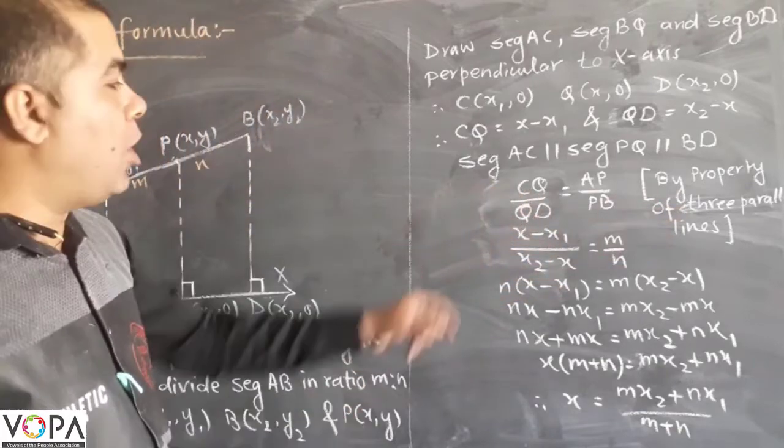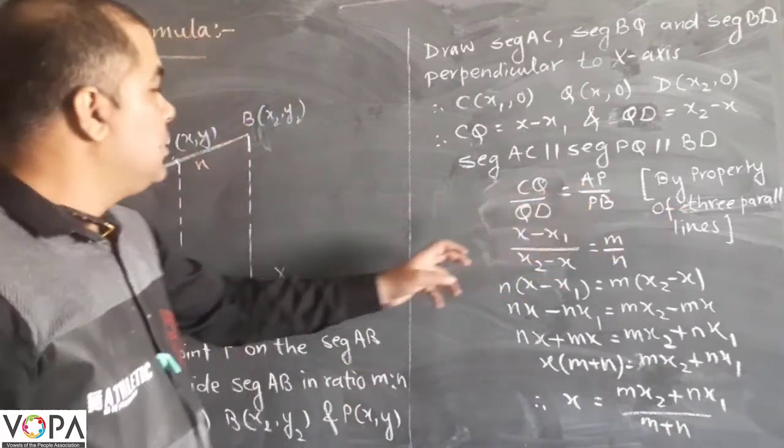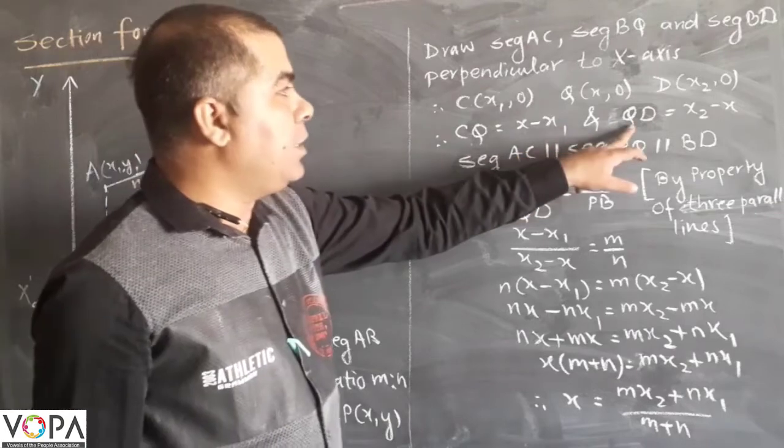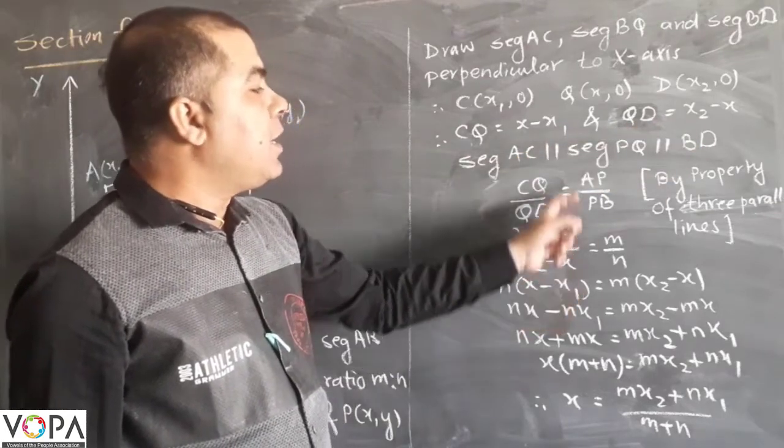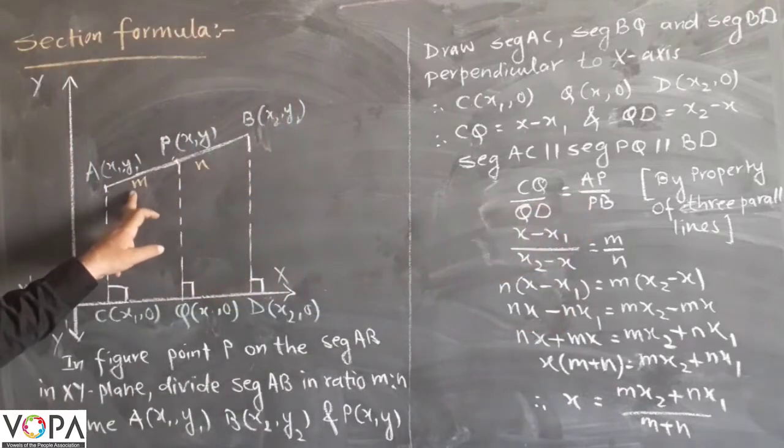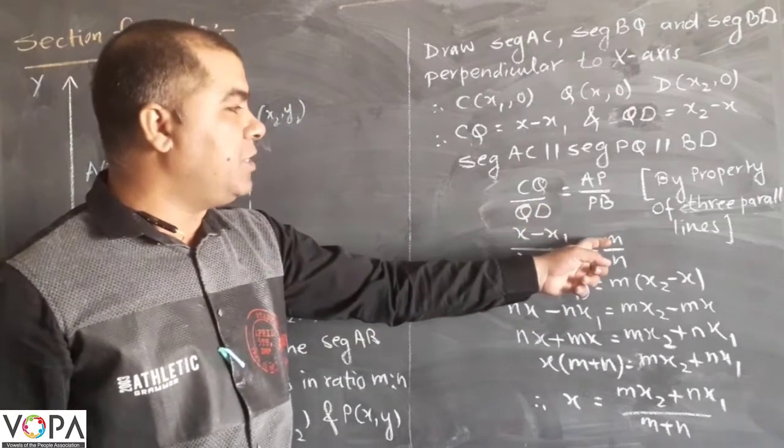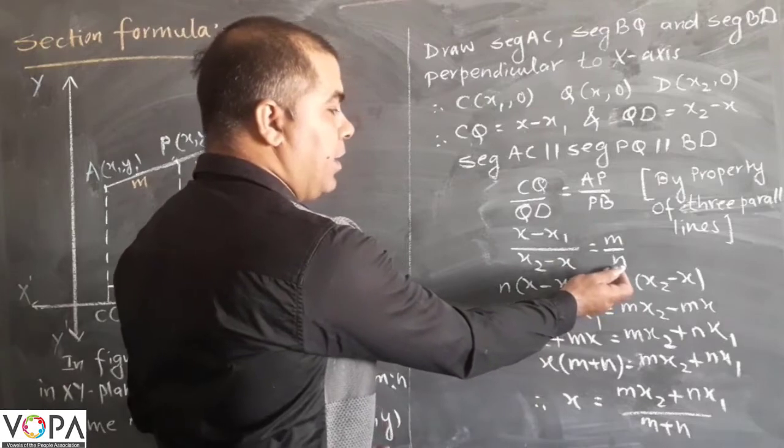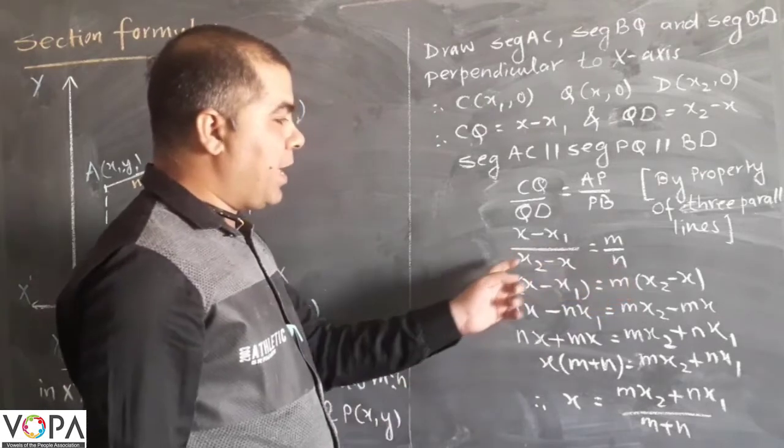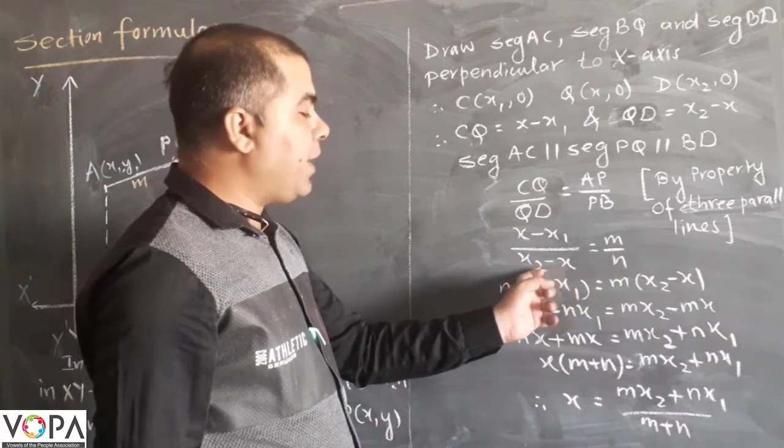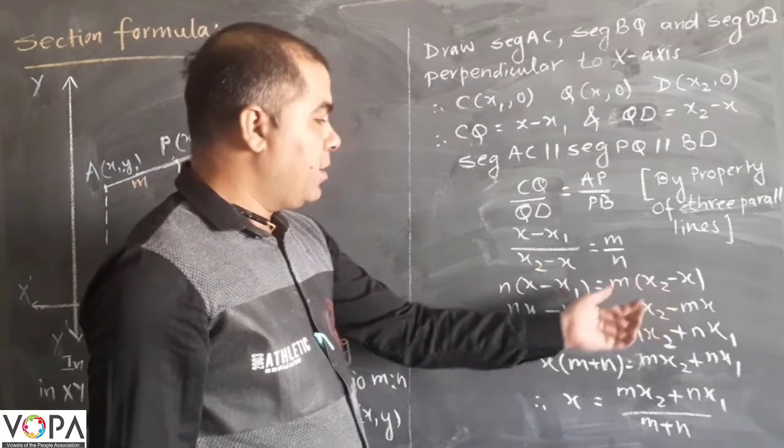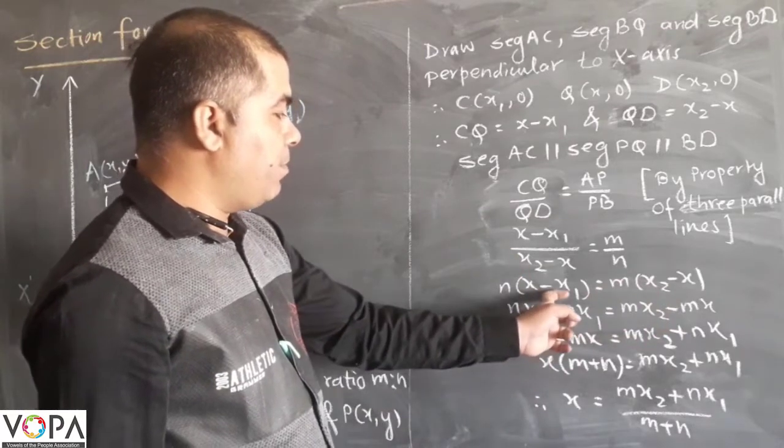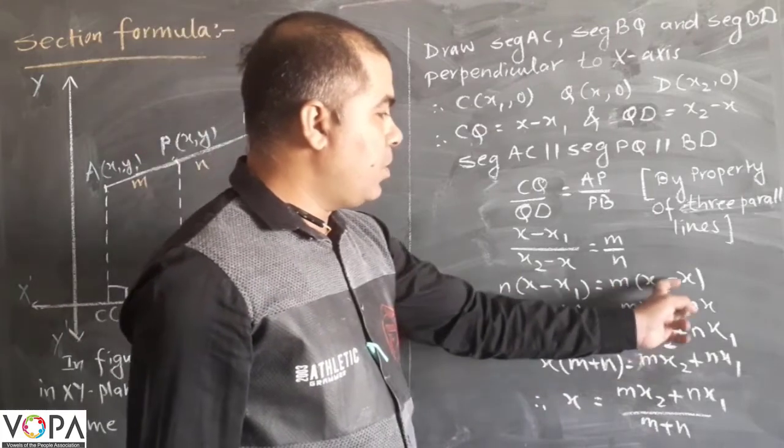Now substitute the value of CQ, QD and AP, PB. The value of CQ is X minus X1 and QD is X2 minus X. AP and PB ratio is taken as M:N. We have substituted it as M upon N. Multiply N with X: NX minus NX1. Similarly MX2 minus MX.